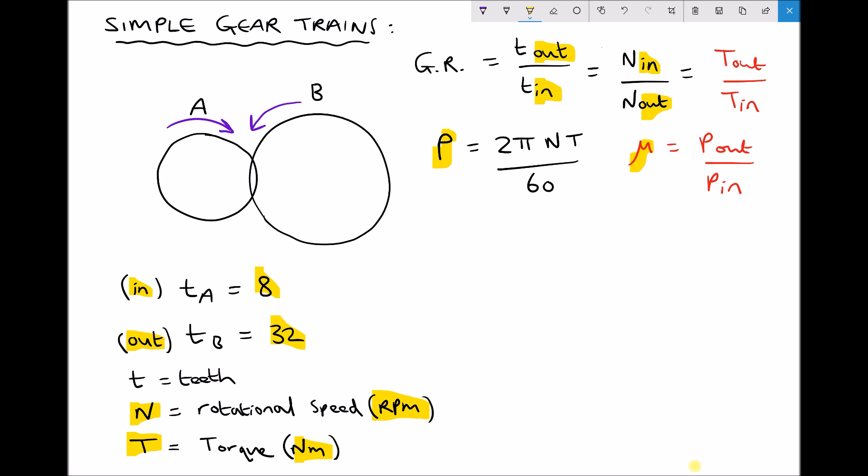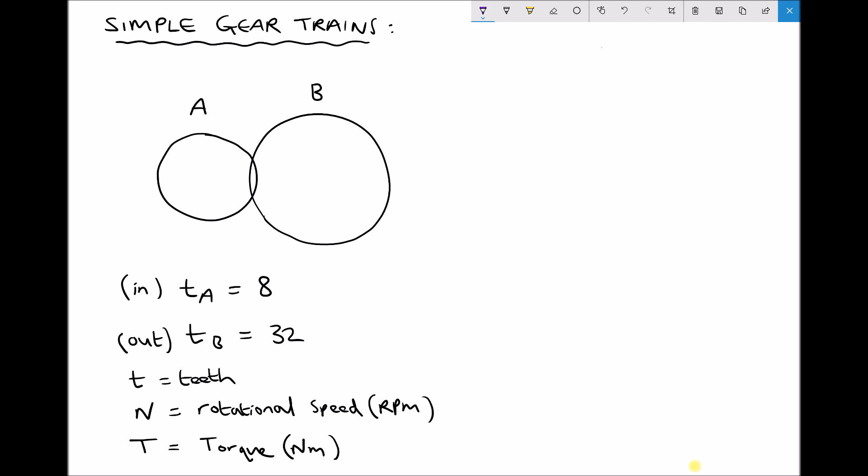So let's start with a simple example and in this example we're going to use gear A with 8 teeth and we're going to use gear B with 32 teeth. First of all let's begin by calculating our gear ratio.